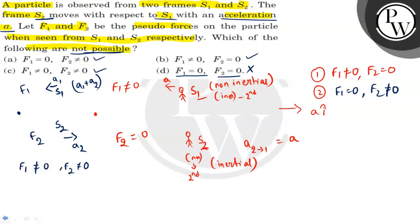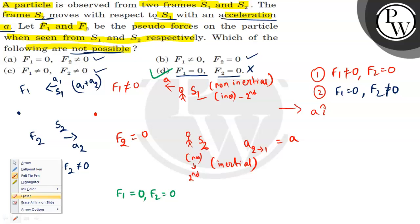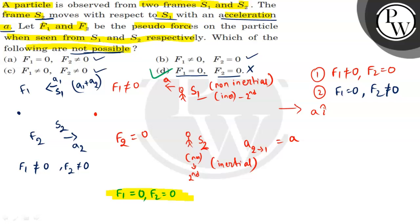Option D: F1 equal to 0 and F2 equal to 0 — this case can never be possible. I hope you understand it well. All the best.